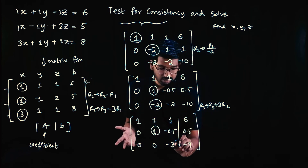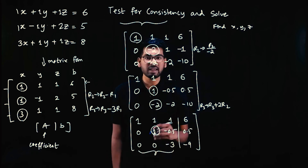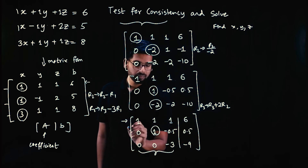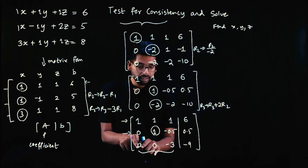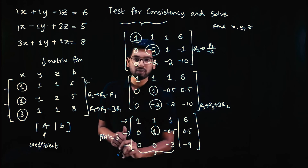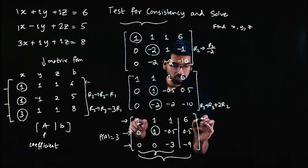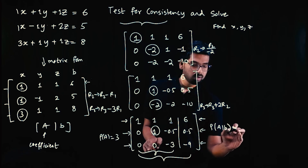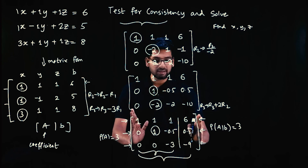Now we find the rank. Rank is the number of non-zero rows. Considering matrix A (first three columns): all three rows are non-zero, so rank of A = 3. Considering the full augmented matrix AB (all four columns): all three rows are still non-zero, so rank of AB = 3. Both ranks equal 3, and the number of rows N = 3.